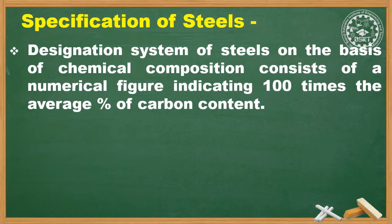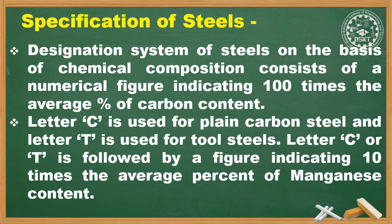The designation system of steels on the basis of chemical composition consists of a numerical figure indicating 100 times the average percentage of carbon content. The letter C is used for plain carbon steel and the letter T is used for tool steels. C or T is followed by a figure indicating 10 times the average percentage of manganese content.